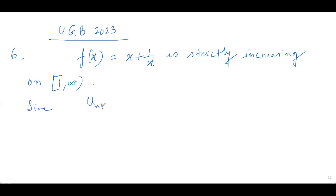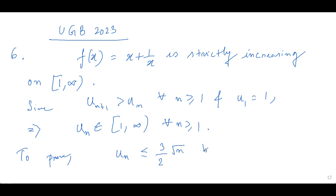Since we have that u_{n+1} > u_n for all n ≥ 1 and it's given that u_1 = 1, it follows that u_n ∈ [1,∞) for all n ≥ 1. Now we are going to prove that u_n ≤ (3/2)√n by induction on n.